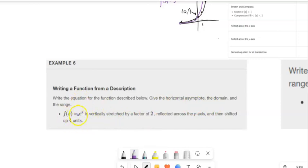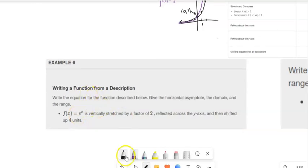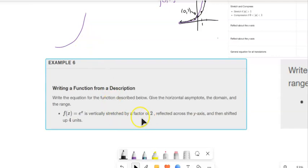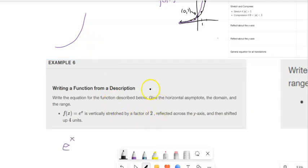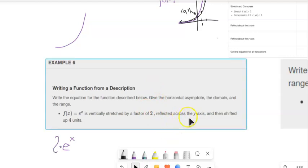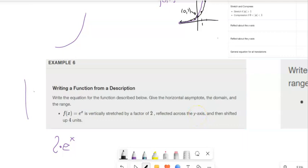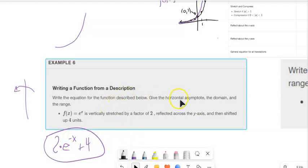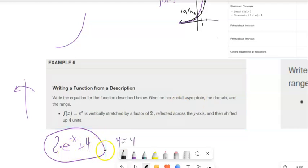f of x is e to the x. So e, remember, is just a number. That's just a base of about 2.7. So that means it's still going to be this exponential growth. Just going over one, being multiplied by about 2.7 each time. Stretched by a factor of two. So we've got this e to the x, stretched by a factor of two. That means it's multiplied by two. Reflected across the y-axis. Y-axis is this one. So it's going this way. So that's going to be negated here. And then shifted up four units. Well, that's plus four out here. So there's an equation that would do that. Stretched by a factor of two, selected across y, shifted up four units. And what that does is notice that moves the asymptote up too. So the asymptote would be up, be like up here. And it should go like that.